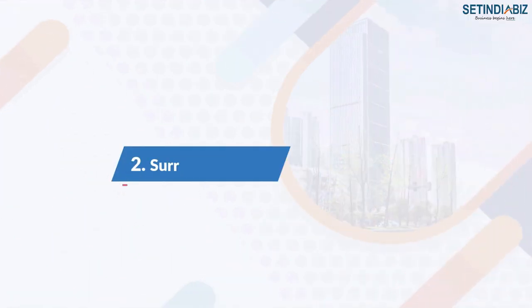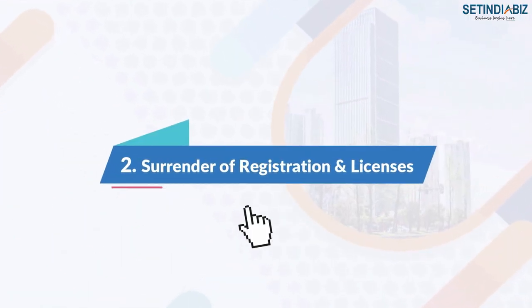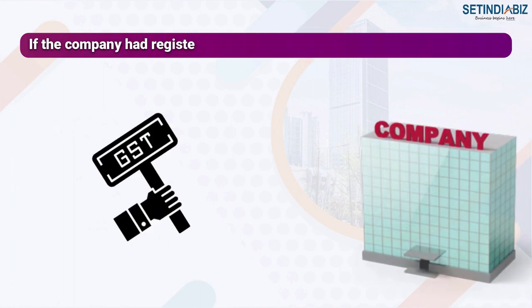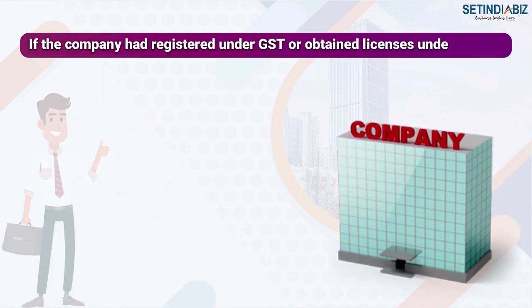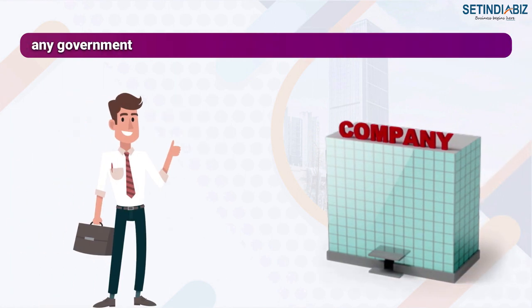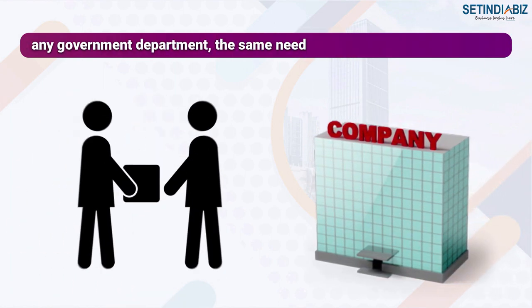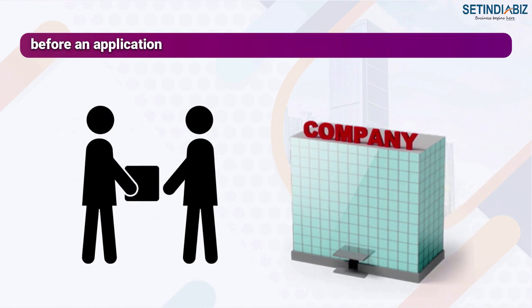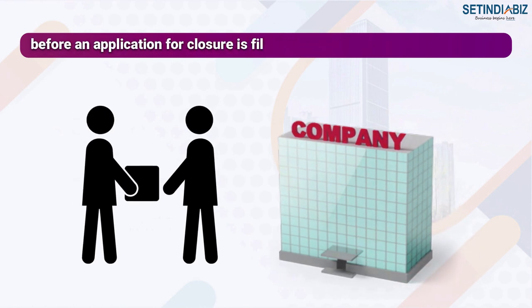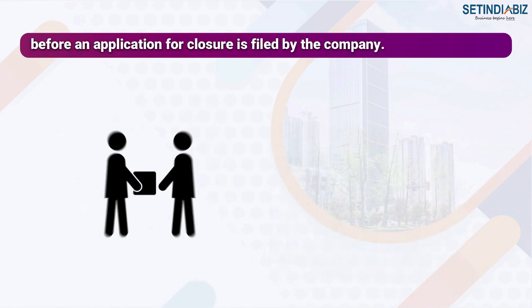Step 2: Surrender of registration and licenses. If the company had registered under GST or obtained a license under any government department, the same need to be surrendered before an application for closure is filed by the company.